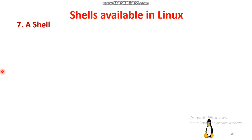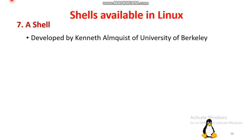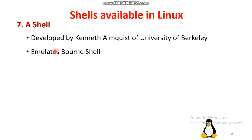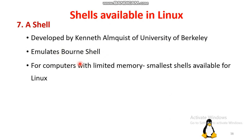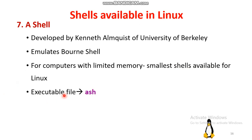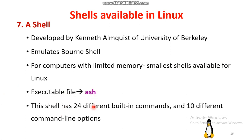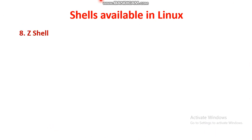The Ash shell was tabulated by Kenneth Almquist of the University of Berkeley and emulates the Bourne shell. It is the smallest shell available, designed for computers with limited memory, with the executable file 'ash'. It has 24 built-in commands and 10 different command line options.